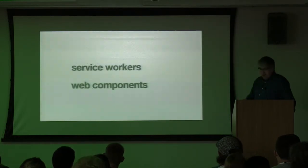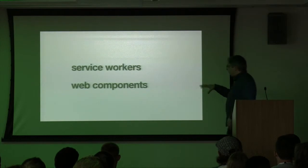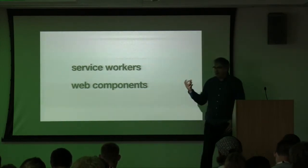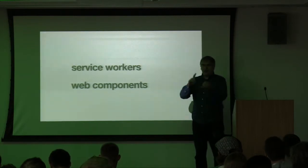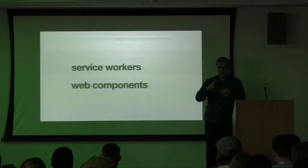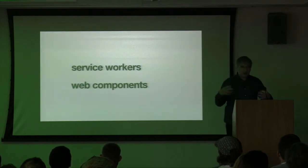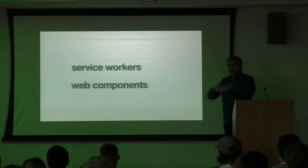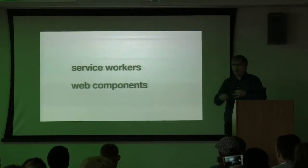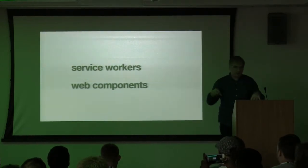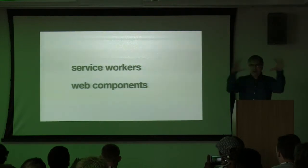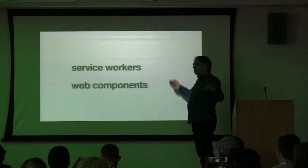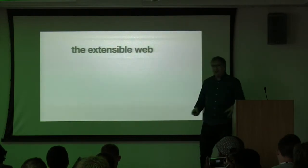I see a commonality between service workers and web components — both are umbrella technologies. A service worker is just a script giving access to the Fetch API, Cache API, notifications API. Web components is an umbrella term for custom elements, shadow DOM, HTML imports. And they all fall into another umbrella term: the extensible web. It's a school of thought — like Chindogu, but for the web. The idea that developers should be given access to low-level bits of the browser, and that we should be the ones coming up with new APIs and new elements. There's a CSS equivalent too: the Houdini project.